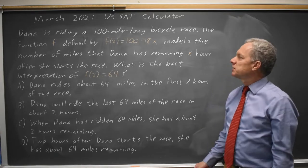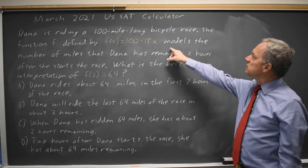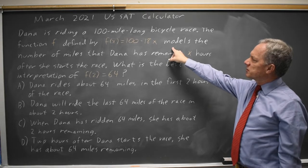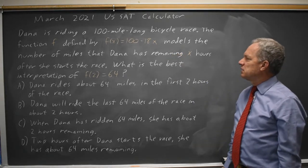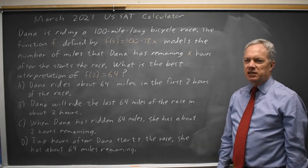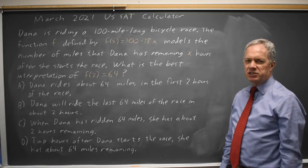College Board is asking about a bicycle racer and Dana has a function f(x) = 100 - 18x that gives the number of miles Dana has remaining x hours after she starts the race.